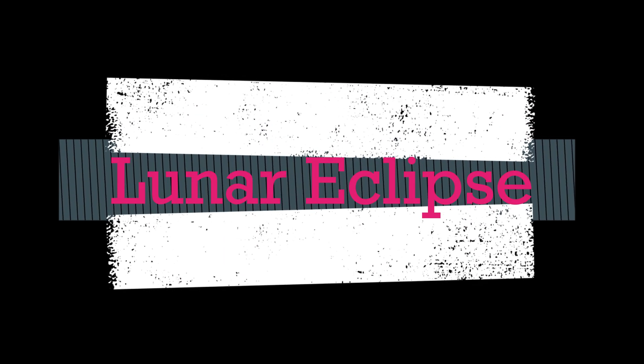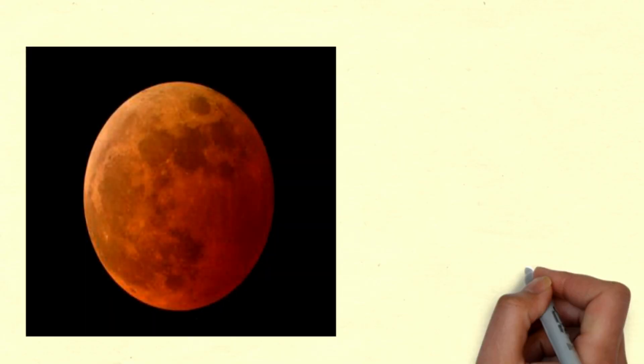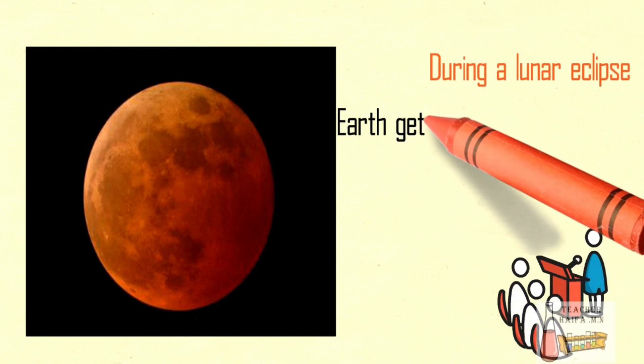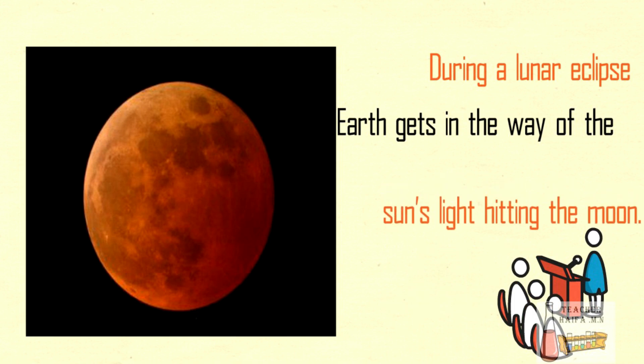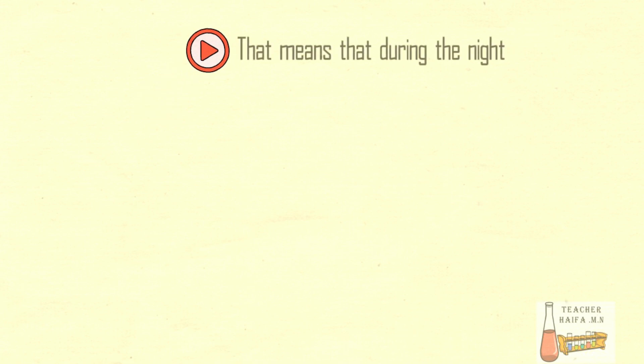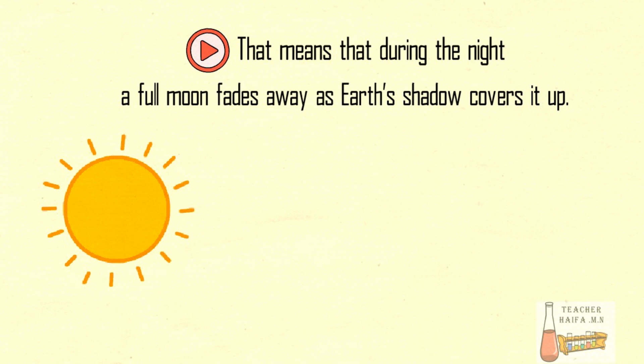Lunar Eclipses. During a lunar eclipse, Earth gets in the way of the sun's light hitting the moon. That means that during the night, a full moon fades away as Earth's shadow covers it up.